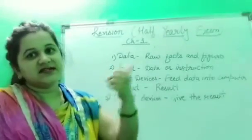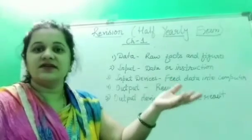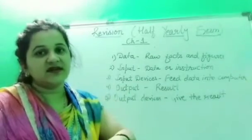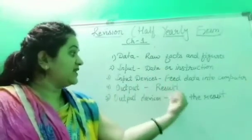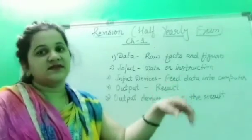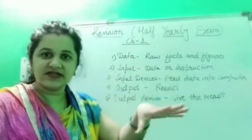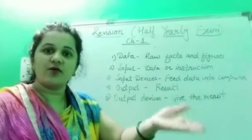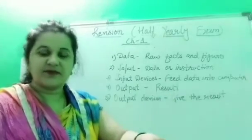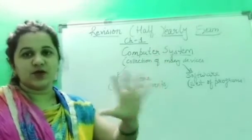After data is given and processing is done, the result needs to be delivered, so we require some devices which can give us the results. These devices are called output devices — like the printer and monitor. The monitor displays the result, and the printer gives the output in the form of a printout on paper. Now let's revise the next topic: Computer System.